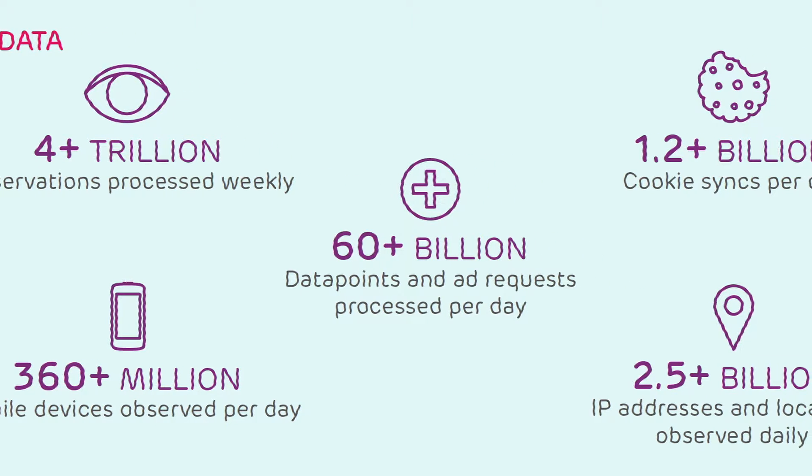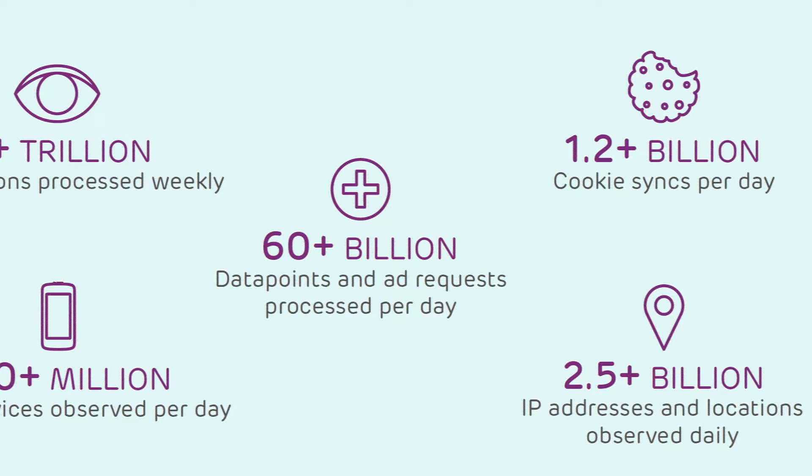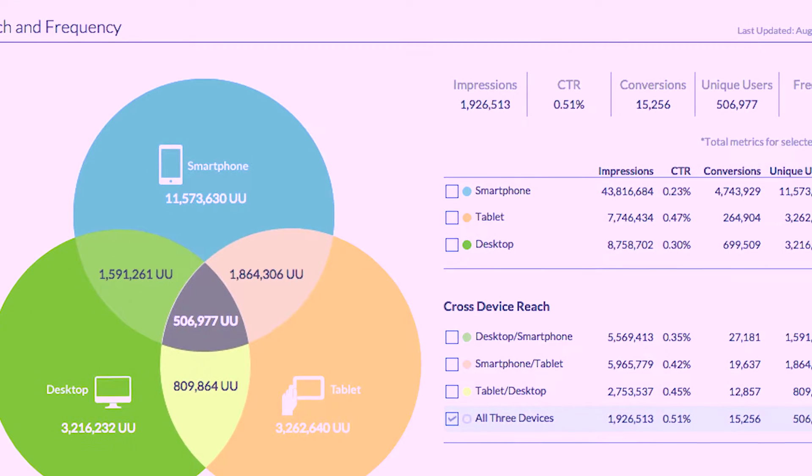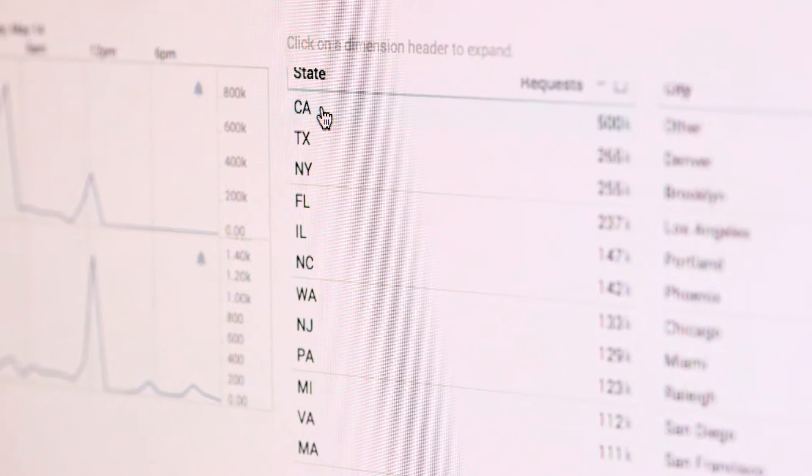At the time, big data was very popular — everyone wanted to do something with big data. But most companies wanted to use big data without having a solid product to build with it. Drawbridge actually had a clear idea: use big data to identify users across multiple devices. They had a solid product, and since I was very interested in big data, I decided to join.